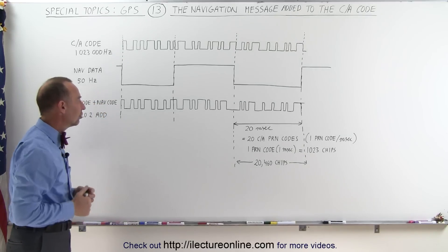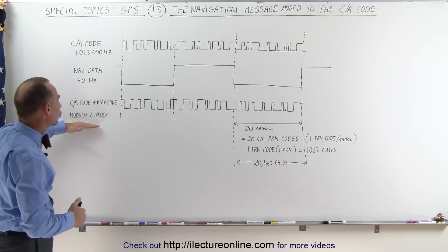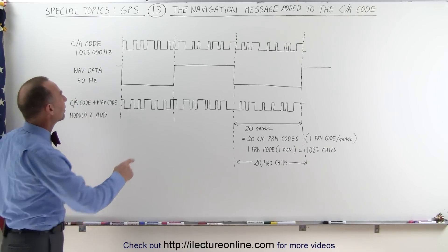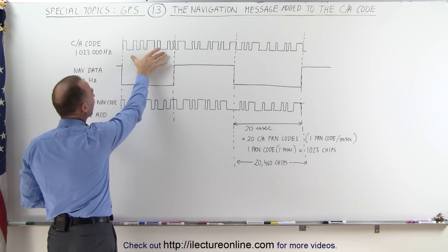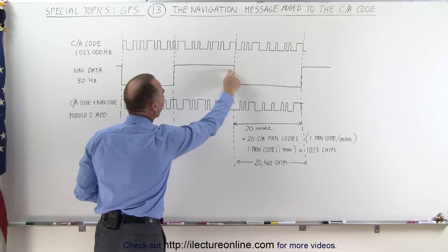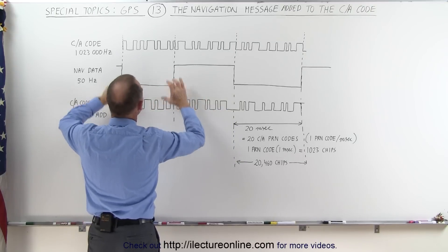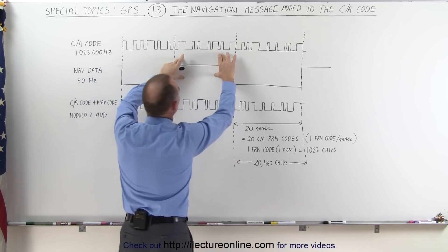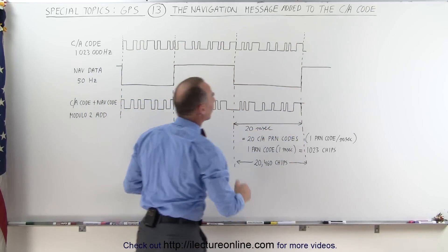Now, the technique that is used is called the modulo 2 add, which means that if the NAV data is low, we just take the PRN code as is, and when the NAV data is high, essentially it takes the PRN code and flips it over. So this is exactly the same as the existing PRN code, here it's completely flipped, here it's exactly the same code, and so forth.